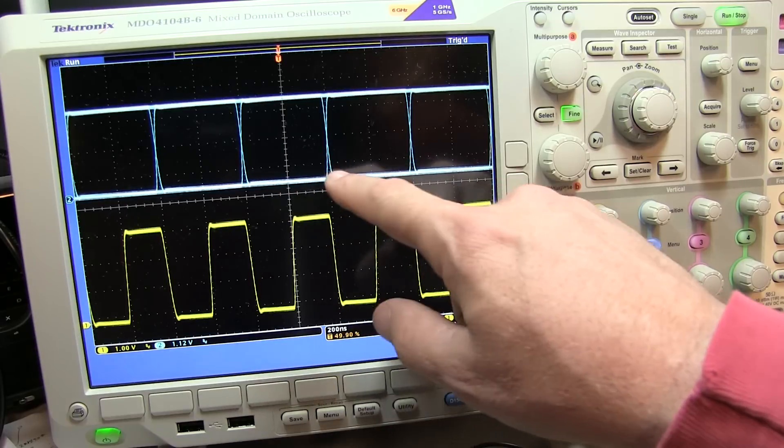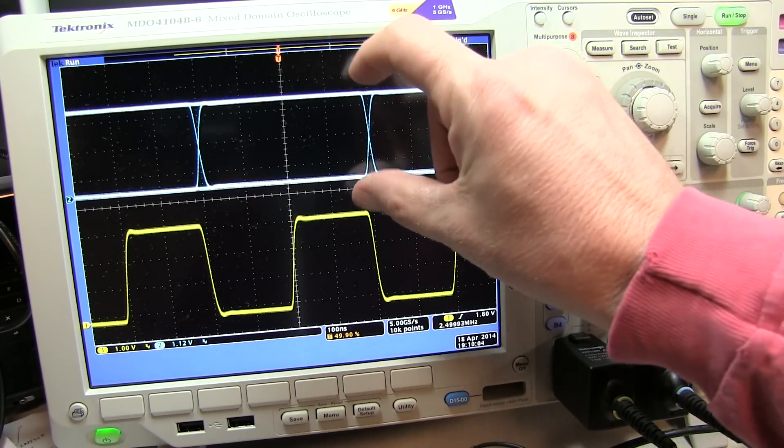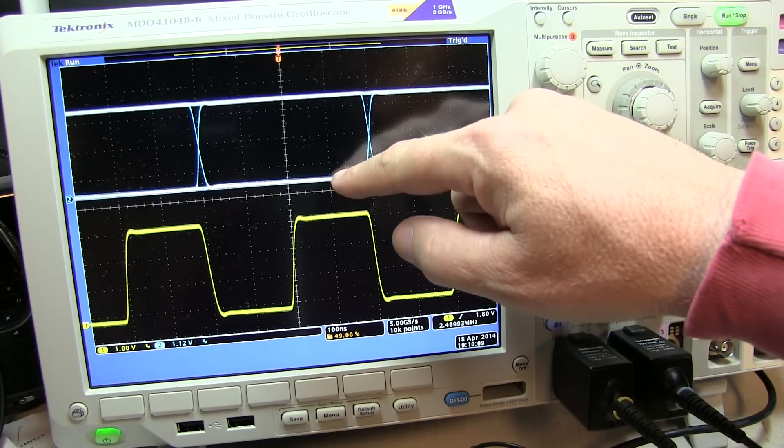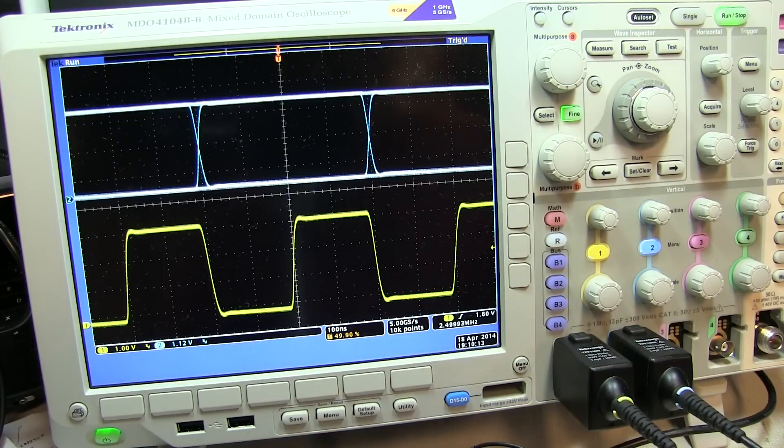So in addition to horizontal eye closure as a figure of merit, another figure of merit for a good eye pattern is the vertical eye opening. And here it's about as good as it gets. The 1, 0, and 1 levels are perfectly flat.